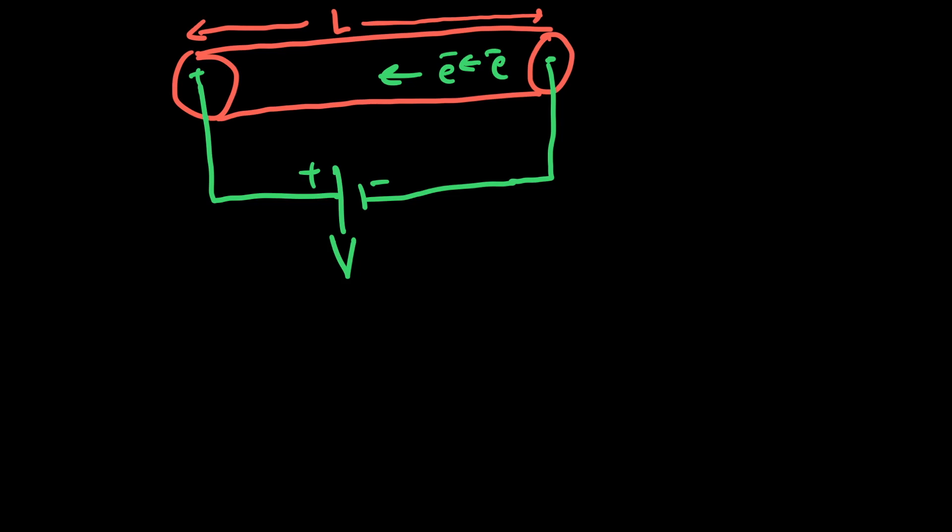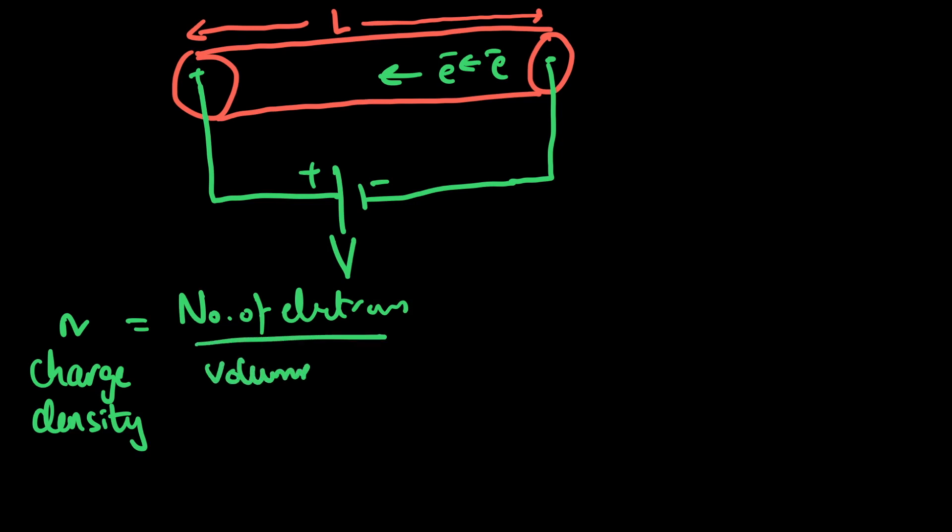Now we'll define a quantity which is small n, and small n is called charge density. Charge density small n is defined as the number of electrons per unit volume. The wire has a base area A on both sides and the length is L, so you can very conveniently write the volume as area into length. The number of electrons capital N would therefore become equal to n times A times L.